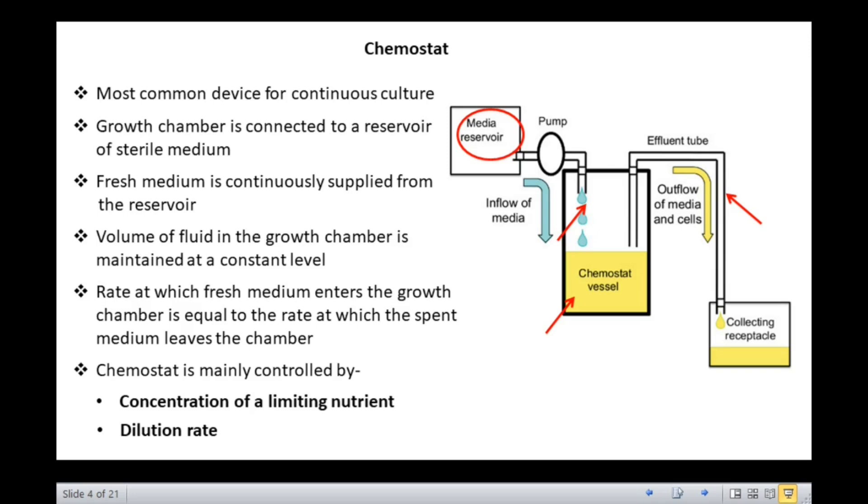All the nutrients are added in excess in the growth medium except one nutrient which may be a growth factor or a vitamin. This limiting nutrient controls the growth rate of the culture, which is determined by the rate at which new medium enters the growth chamber. The final cell density depends upon the concentration of limiting nutrient.